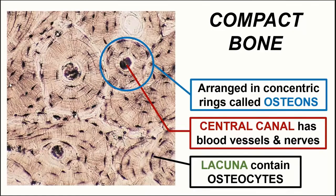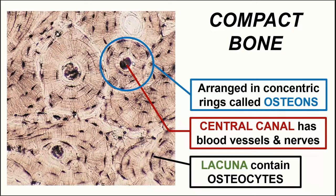Compact bone is arranged microscopically in units of concentric rings — concentric meaning these rings are nested within one another. When we investigate further, we see that these concentric rings are actually pillars nested within one another. Under the microscope in this cross-sectional view, they simply look like ring-like structures because we're only looking at a thin section. These concentric rings are called osteons, which are the basic unit of compact bone.